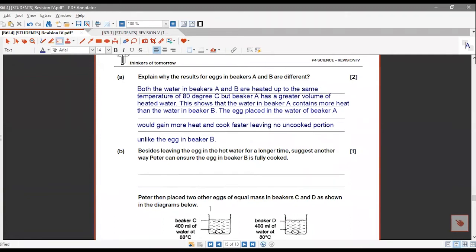So what do you think we can straight away do to ensure that the egg in Beaker B is fully cooked? Since from the result of A, we already know that 400ml of water versus 200ml of water, the 400ml will allow the egg to be cooked completely. So what do you think we can do for Beaker B?